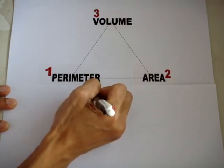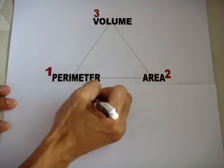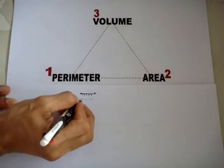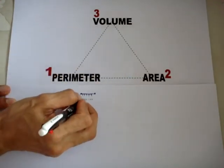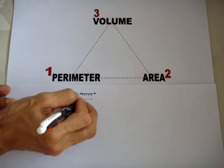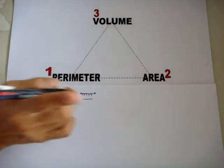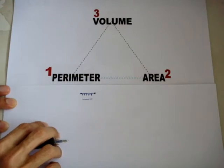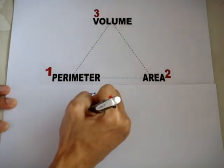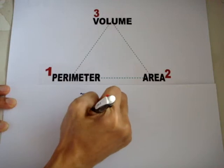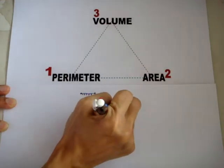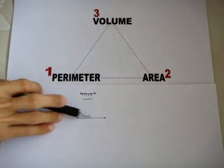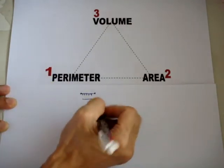Inside what we call a line, there are a lot of dots. When a lot of dots join together, they actually form a line. In perimeter, it's talking about when a person walks horizontally from one point to another point.